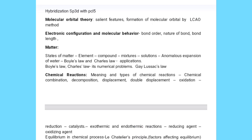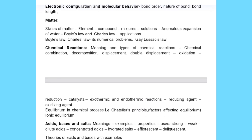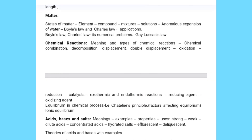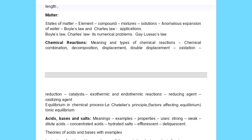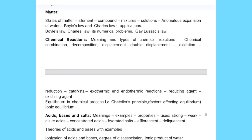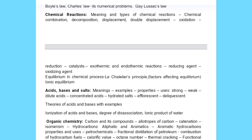Next is states of matter — this is also one of the basic concepts, an easy but very important topic. It mainly covers Charles's law, Boyle's law, and numericals based on these. Then moving to chemical reactions — this entire chapter is already covered for the GPSTR exam and you can find those videos in the playlist.